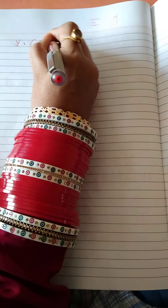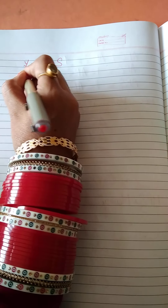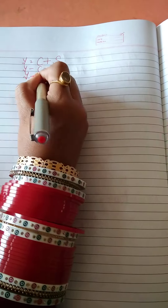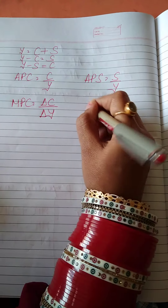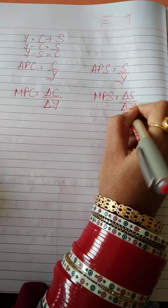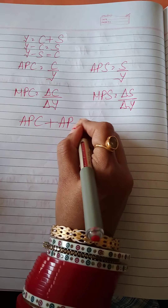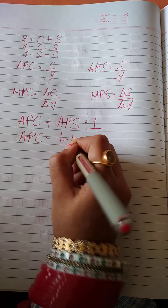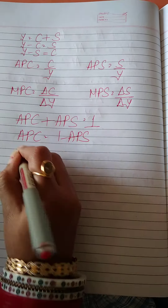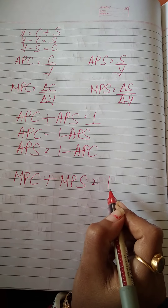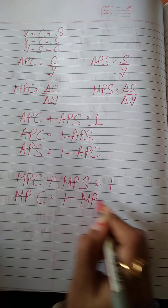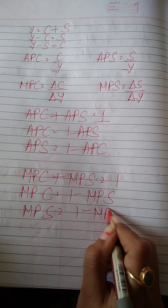Let us recall all the formulas: Y = C + S; Y − C = S; Y − S = C. APC = C upon Y; APS = S upon Y; MPC = delta C upon delta Y; MPS = delta S upon delta Y. APC + APS = 1; MPC + MPS = 1.